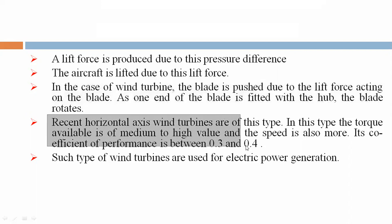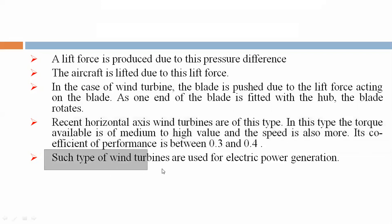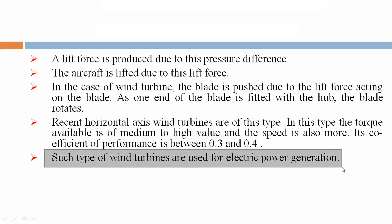Recent horizontal axis wind turbines are of this lift-based type. In this type, the torque available is medium to high and the speed is also more. The coefficient of performance is between 0.3 and 0.4. This type of wind turbine is used for electric power generation.